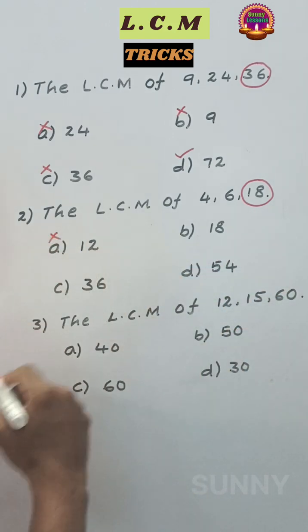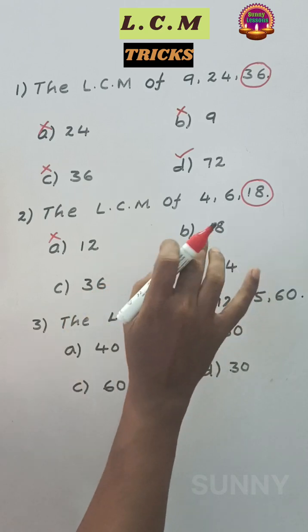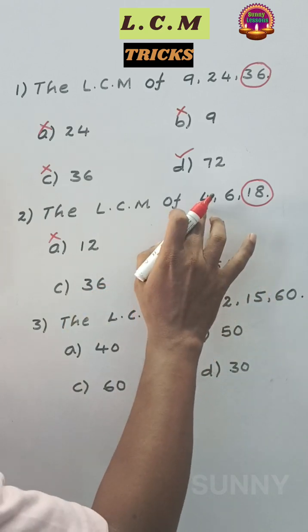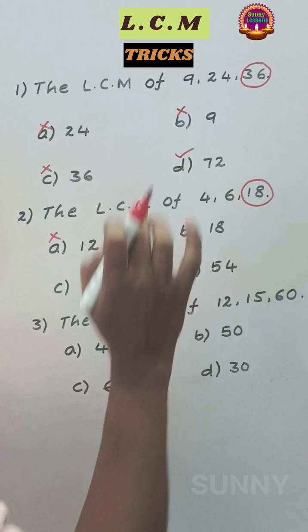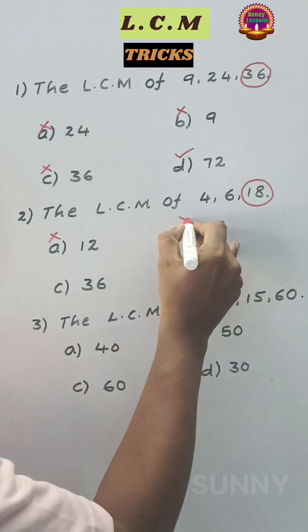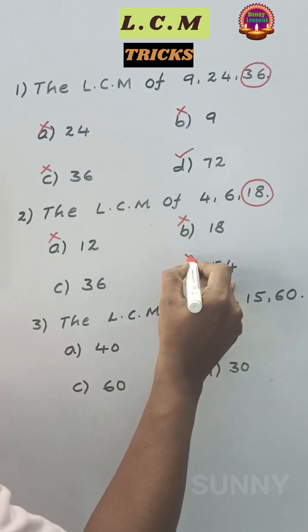12 is not a multiple of 18. 18, 36, 54 are the multiples of 18. You ask for the LCM. The number is divisible by 4, 6, and 18. 18 is not divisible by 4. 54 is not divisible by 4.